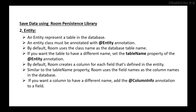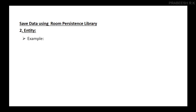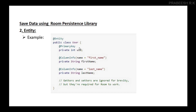If you want a column to have a different name, add the @ColumnInfo annotation to that field. Each entity must define at least one field as a primary key — even when there is only one field, you still need to annotate that field with the @PrimaryKey annotation. Here is a simple example of an Entity class. The User class is an Entity class, meaning it represents a table in your database, so you annotate this class with @Entity. Every Entity class must contain a primary key field.